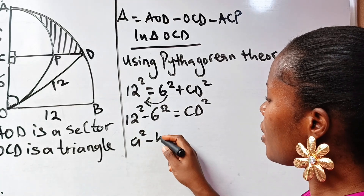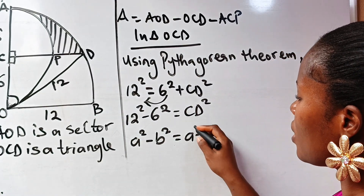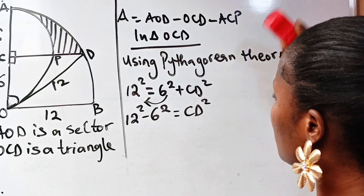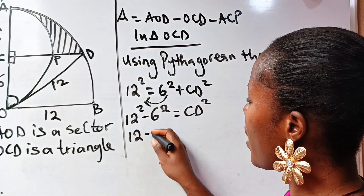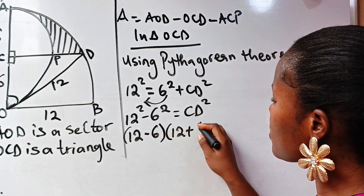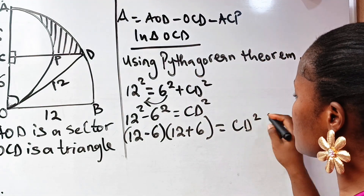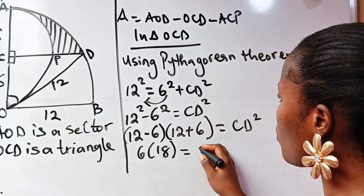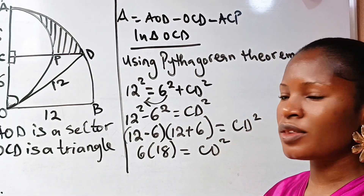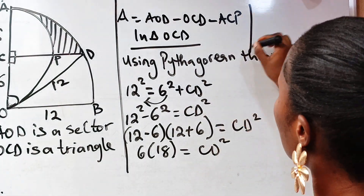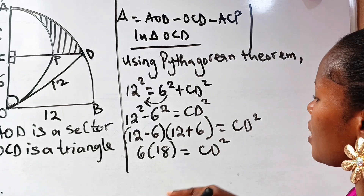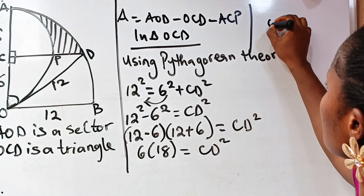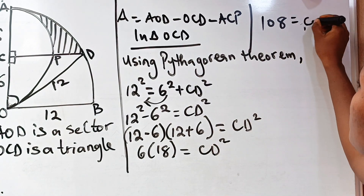Remember that when you have a² minus b², that equals (a minus b)(a plus b). So we can write this as (12 minus 6) multiplied by (12 plus 6) equals CD squared. 12 minus 6 is 6, and 12 plus 6 is 18, so 6 times 18 equals CD squared. That gives us 108 equals CD squared.